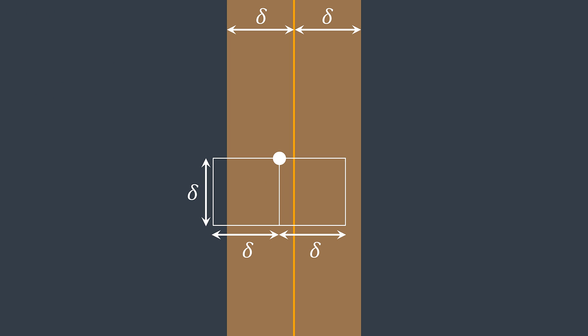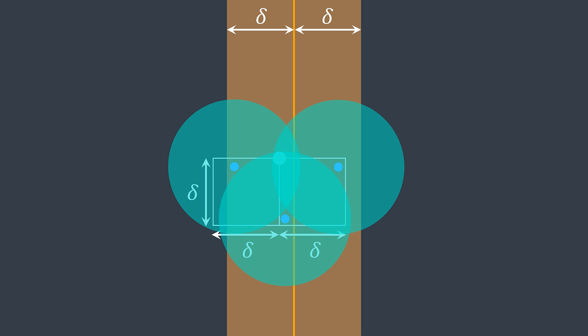Let's see some examples showing there can't be more than six points in the Delta by 2·Delta rectangle satisfying the condition. Place a point here, another here, another here. If we try to add another point on the left side of the rectangle, it must fall inside one of the circles of radius Delta — giving a distance smaller than Delta, which is a contradiction. If that point really existed, we would have found Delta prime as the minimum and not Delta.